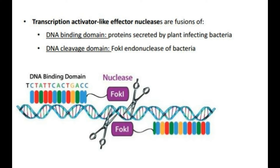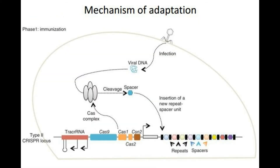The DNA cleavage domain here is again FokI, and it is only active as a dimer. So we can easily engineer the DNA binding domain so that the TALENs can cleave essentially any sequence of our interest. The third, more popular and upcoming technique is the CRISPR-Cas9 technique. Here we have clusters of regularly interspaced palindromic repeats, which are arrays of about 200 to 600 palindromic repeats discovered in the genomes of around 50 bacteria.